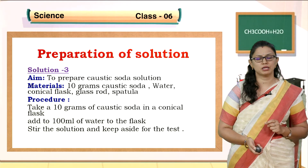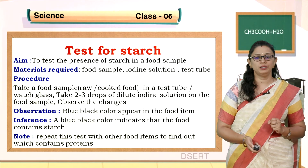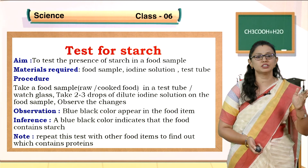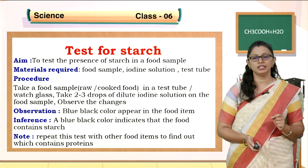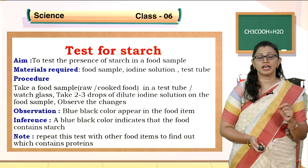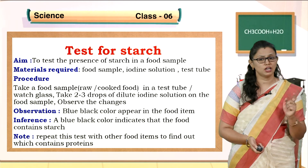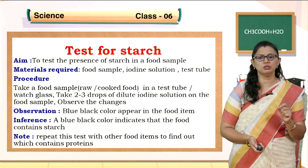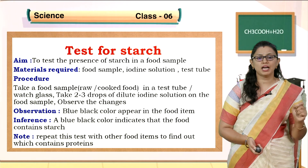Now we will test for starch, which is a constituent of carbohydrates. The aim is to test the presence of starch in a food sample. Materials required: food sample, iodine solution already prepared, and test tubes. Procedure: take a food sample - raw or cooked - in a test tube or watch glass. Add 2 to 3 drops of dilute iodine solution on the food sample and observe the changes. You can observe a blue-black color appearing in the food. This blue-black color indicates that food contains starch.